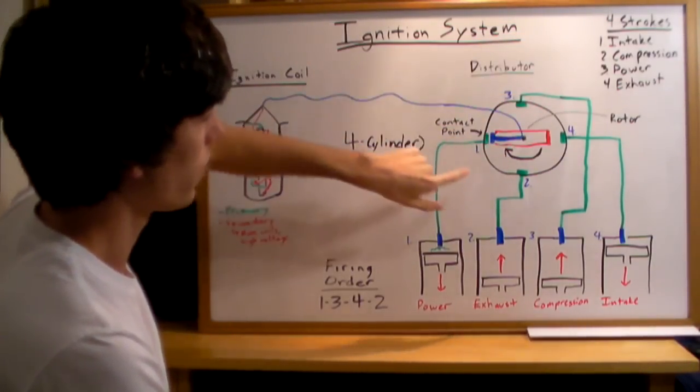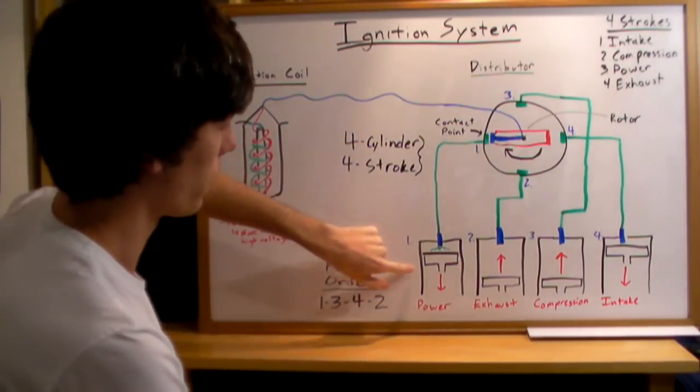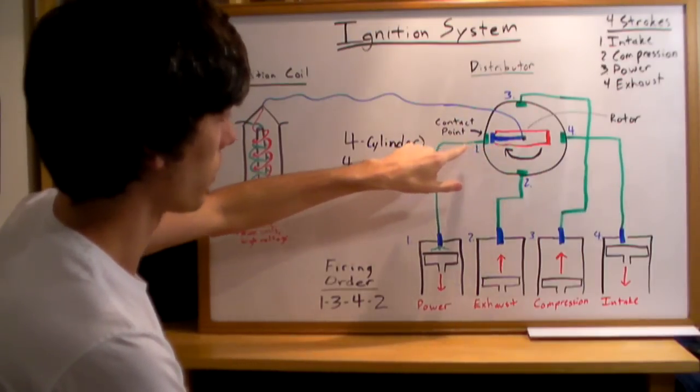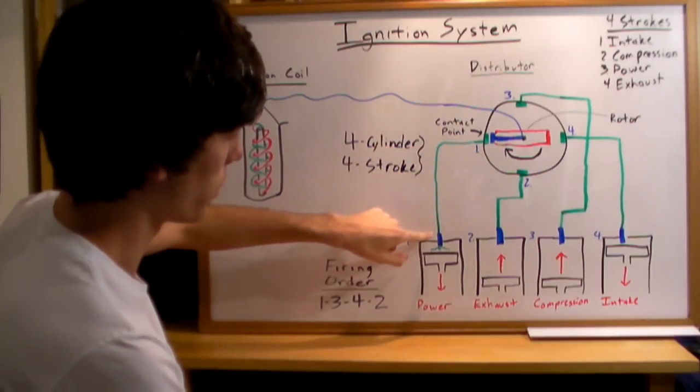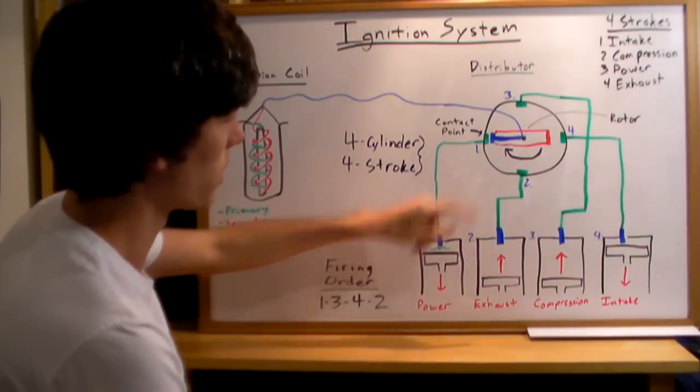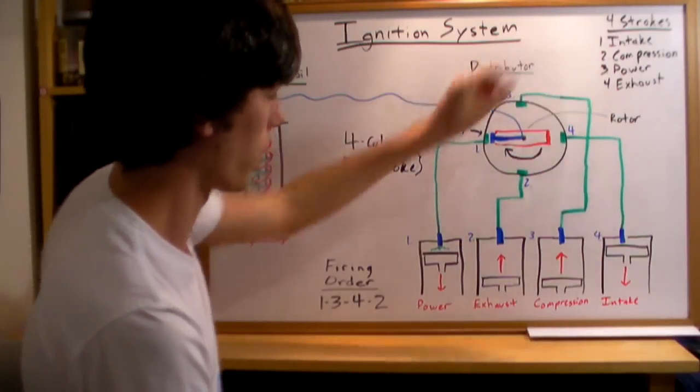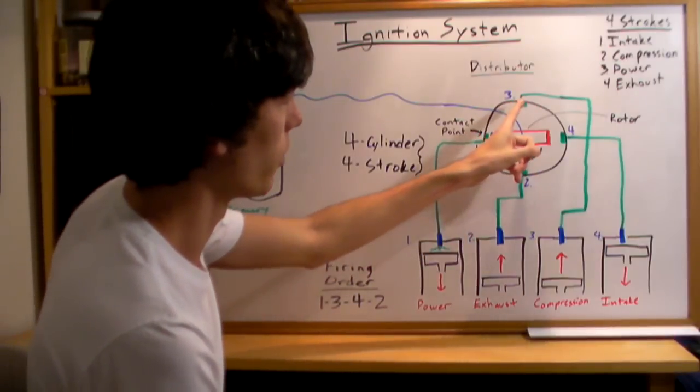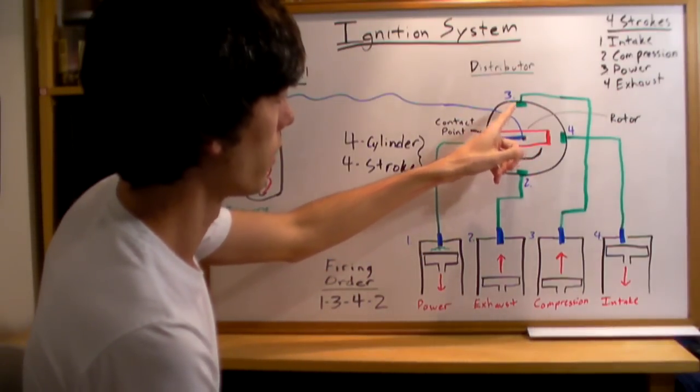Let's say we start with our first cylinder here. The distributor cap is going to send the voltage to the current to the first spark plug, which is going to be in the power stroke. Then it's going to move to the third cylinder.